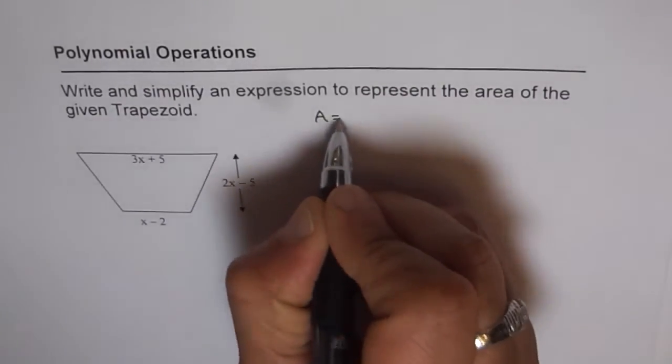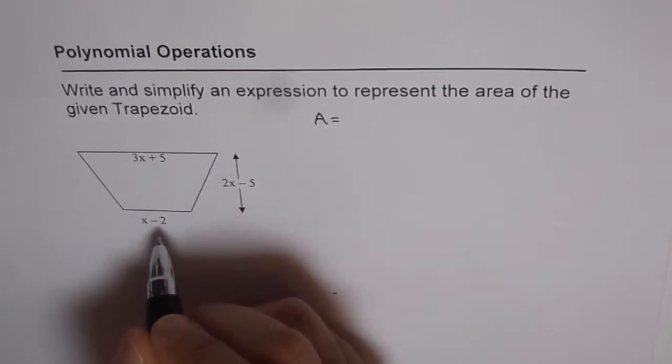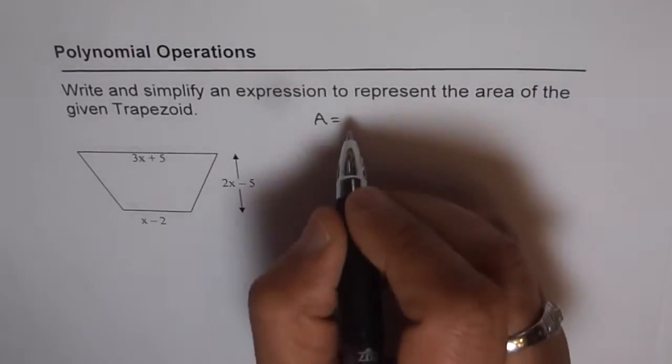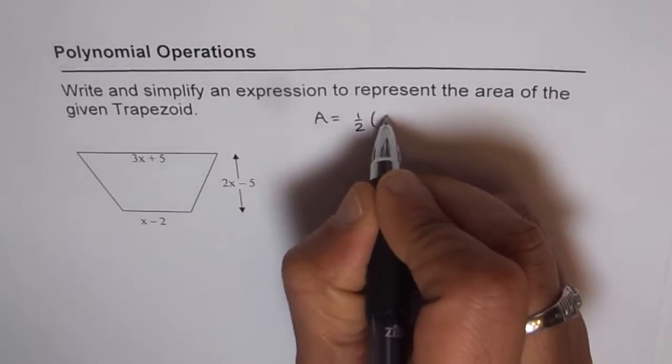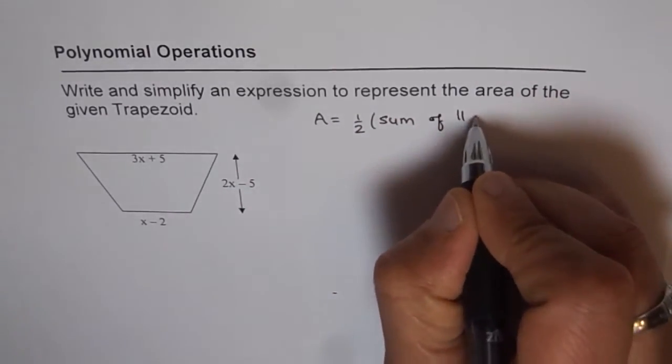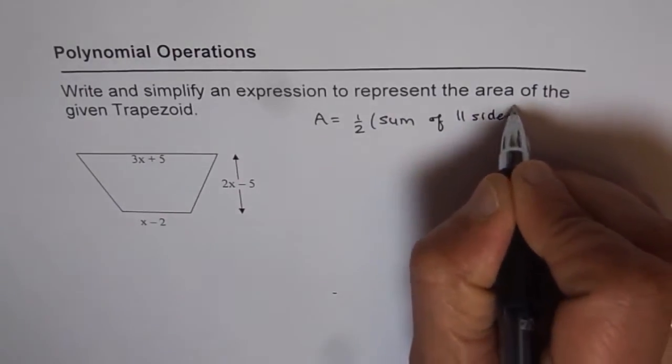The area of a trapezoid is sum of these two sides times height divided by 2, or we can say half of sum of parallel sides times height.